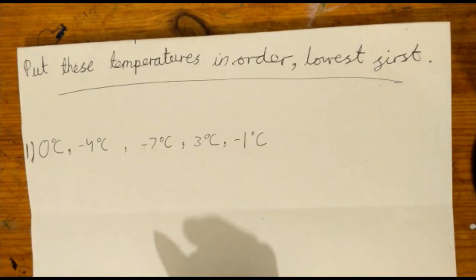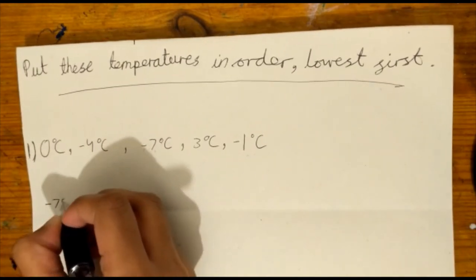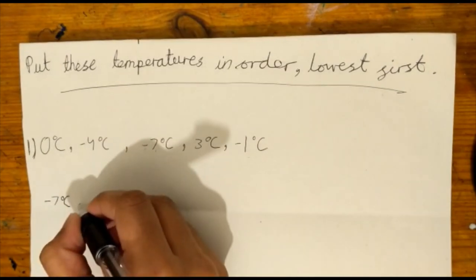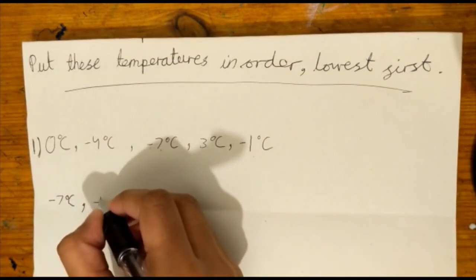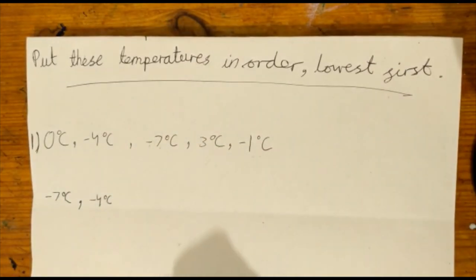That means the lowest one is minus 7 degrees, as it is the lowest from 0, which means it is the coldest. Then we have minus 4 degrees. Even though it's a bit hotter than minus 7 degrees, it is the second coldest.